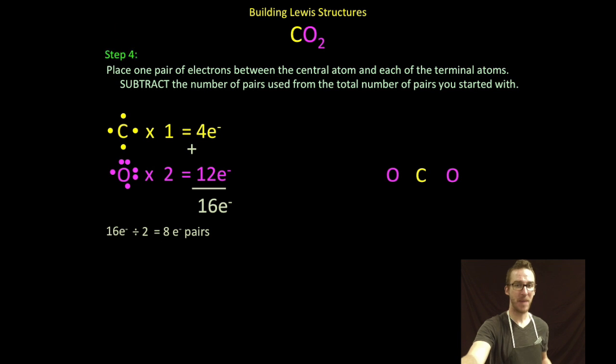Step four, place a pair of electrons between the central atom and each of the terminal atoms. Recognize I've color-coded here so that you can remember that one of those electrons is coming from the central atom and one from the terminal. I subtract the number of pairs used, in this case, just two. I've got six pairs left over.